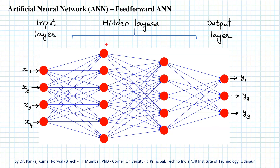The nodes in a particular layer are connected only with nodes in the previous layer and nodes in the next layer. The first layer receives input from an external source and is called the input layer, and the last layer gives output to an external source and is called the output layer. The layers between the input and output layers are not accessible to an external source and are called hidden layers. Because input flows in a forward direction through the network, this architecture is called a feedforward artificial neural network.